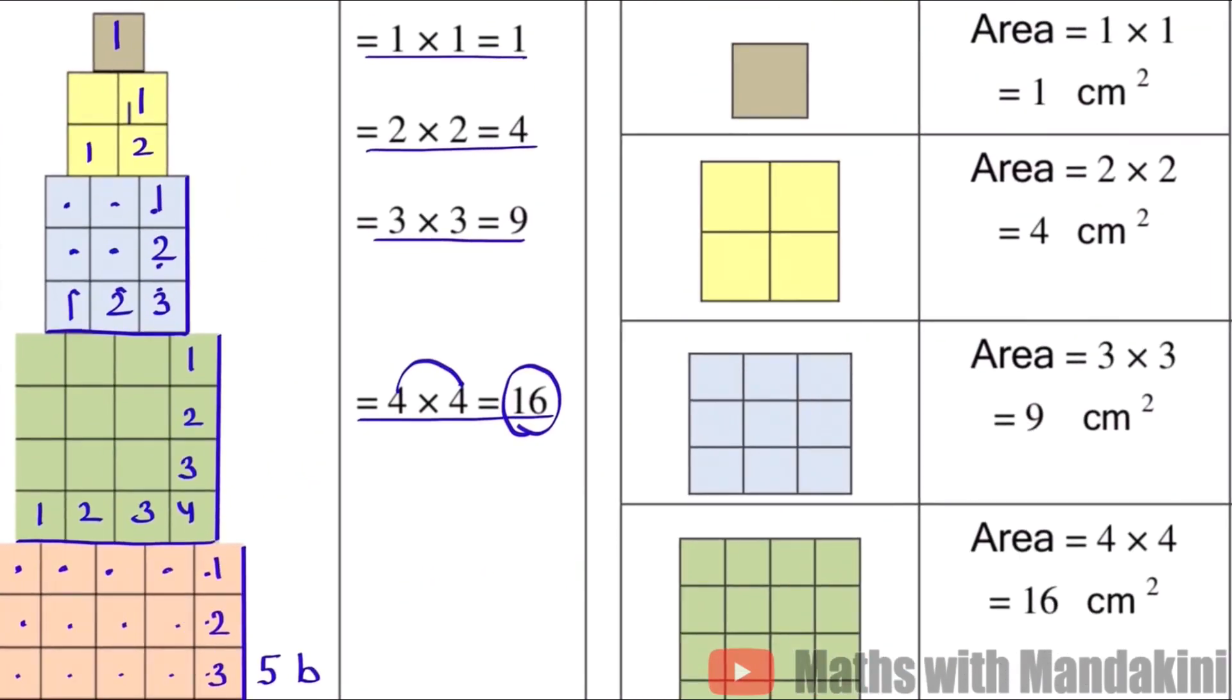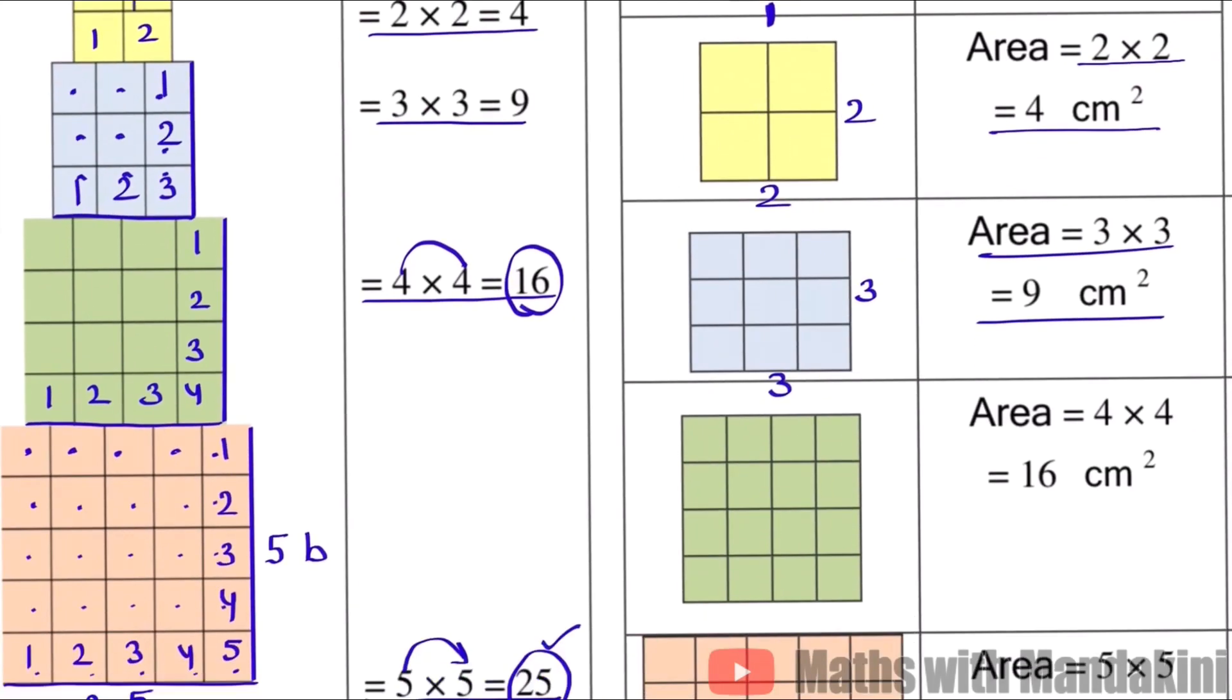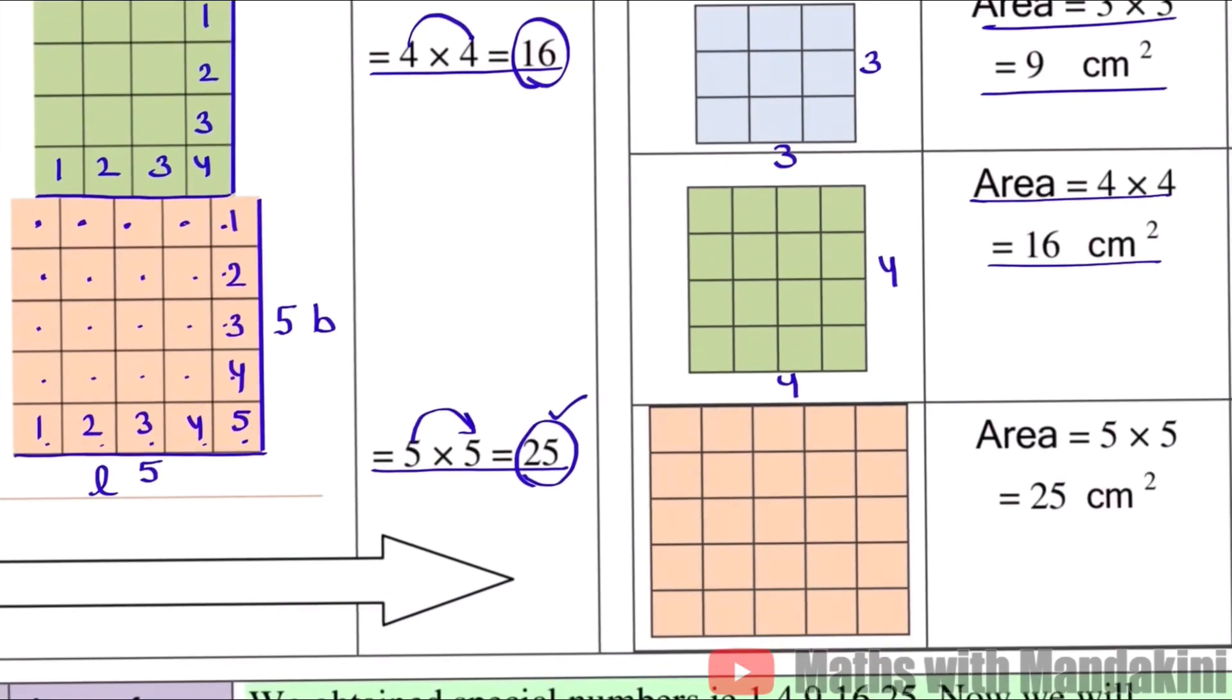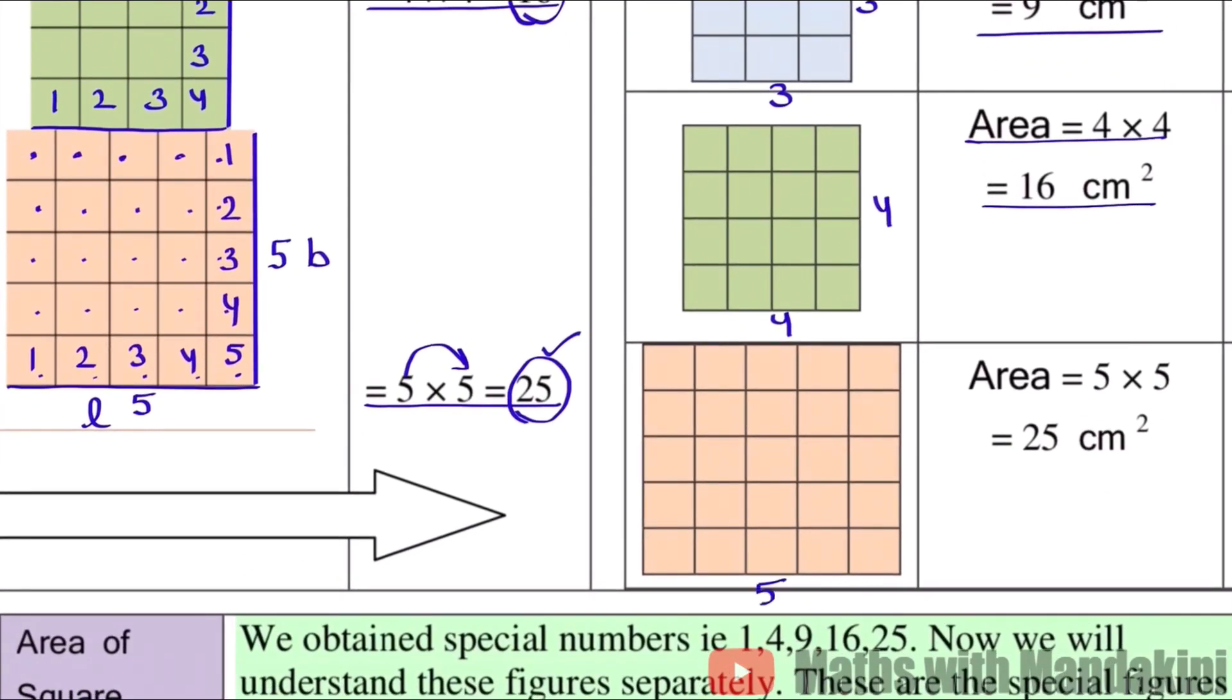So one block, area: length is 1, breadth is 1. Side into side, area 1 into 1, 1 cm square. Here 2, 2, 2 into 2, 4 cm square. 3, 3, 3 into 3, 9 cm square. Next 4, 4, 4 into 4, 16 cm square. And this is our 5, 5, 5 into 5, 25 cm square.